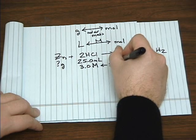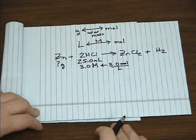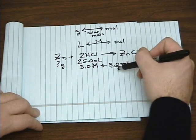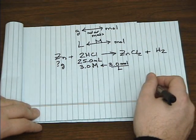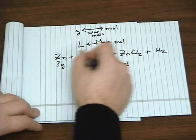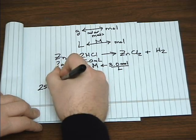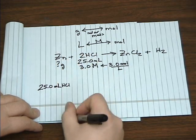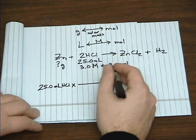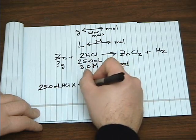Now remember, 3 molar is another way to say 3 moles per liter. So you have 3 moles of hydrochloric acid per liter of solution. Like we did in previous stoichiometry problems, we start with our given measurement, which is 25 milliliters of HCl. Again, molarity is moles per liter, so we need to convert milliliters to liters.